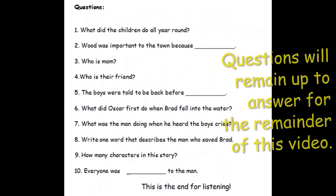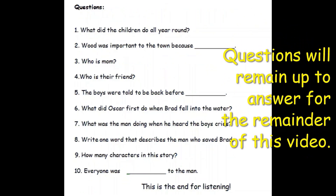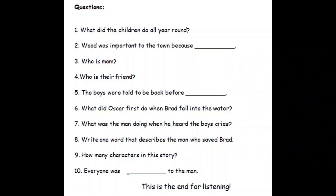Questions. Number one: what did the children do all year round? Number two: wood was important to the town because... Number three: who is mom? Number four: who is their friend? Number five: the boys were told to be back before... Number six: what did Oscar do when Brad fell into the water? Number seven: what was the man doing when he heard the boys' cries?